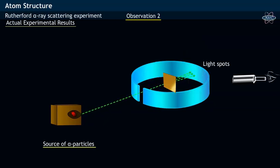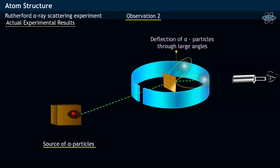In his second observation, Rutherford noticed that only a few alpha particles are deflected through large angles as shown.